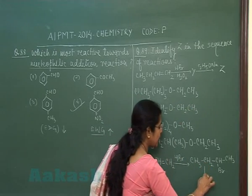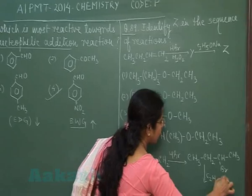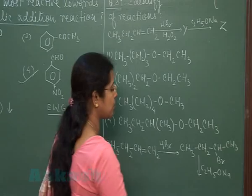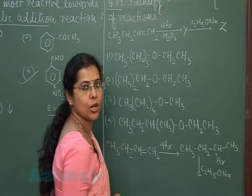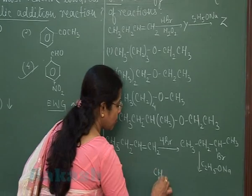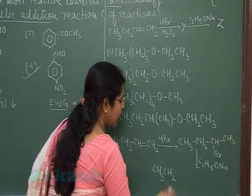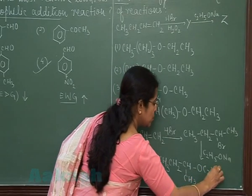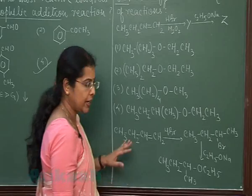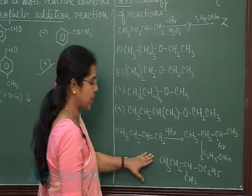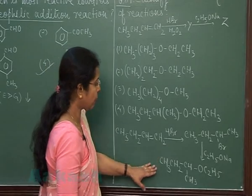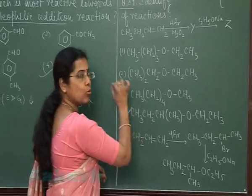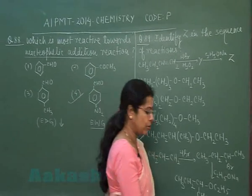When compound Y is treated with C₂H₅ONa, nucleophilic substitution takes place and bromine is replaced by an alkoxide group, resulting in the formation of an ether having the structure CH₃OC₂H₅ type. The compound Z must have this ether structure. So the correct option is the fourth option.